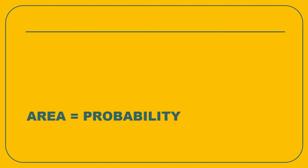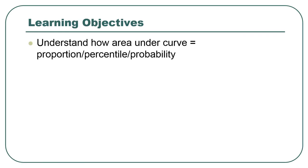For this lecture we're going to continue talking about the process of converting raw scores into z-scores and finding probabilities and areas in the normal distribution. We're going to start out talking about why probability equals area in a continuous distribution — specifically how the area under the curve of a density distribution is the same as the proportion, percentile, or probability of a certain range of values in that distribution.